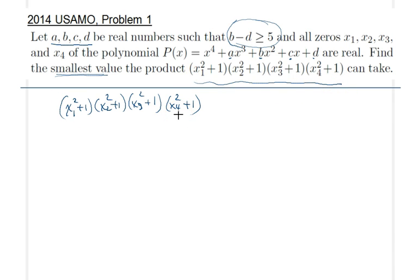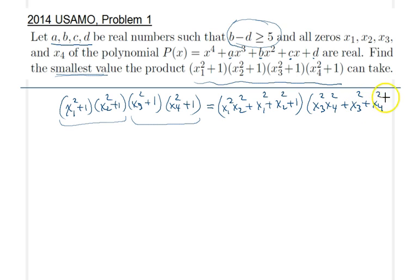I will simply go ahead and multiply these expressions, but in a smart way. I will just multiply the first two terms and then I will multiply the other two terms. Therefore what we have here is that this expression is equal to this long expression. So we have x₁ squared x₂ squared, then we have x₁ squared plus x₂ squared, I believe, plus 1, and we'll have a similar expression for the other two terms as well.